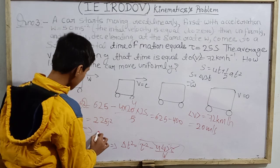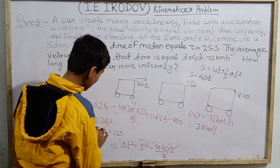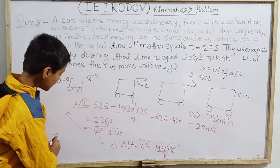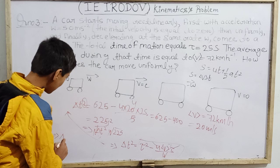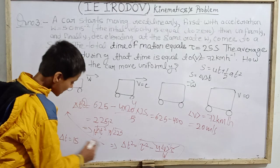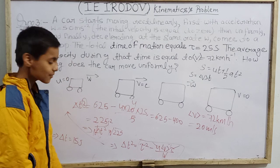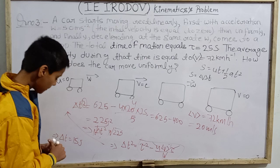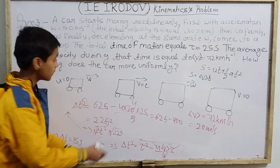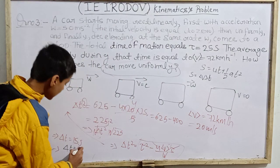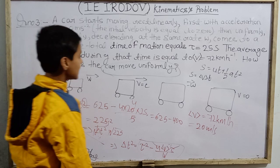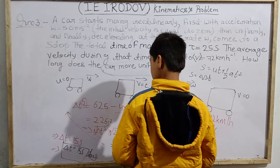Delta T square root of 225 is 15 seconds. So delta T = 15 seconds is the time period during which the car moves uniformly. This is our final correct answer.